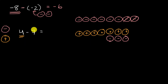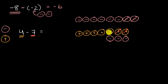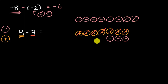Now, if I'm taking away a positive seven, I can take away seven positive number chips — one, two, three, four, five, six, seven. What am I left with? All the positive number chips are gone, and all I have left are three negative number chips. So this is going to be negative three — three negative number chips is the same thing as negative three.